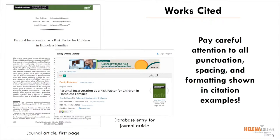Each of your sources will also be included in your list of works cited at the end of the paper. Your list of works cited provides the full citation for each source with enough information for a reader to find it. You should be able to find all of the information you need on the first page of the article and on the entry in the database for the article — this is usually where you found the link to the PDF file of the article from the library.